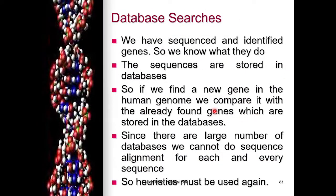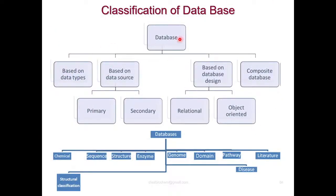If we find a new gene in the human genome, we can compare it with already-found genes stored in the database. Since there are a large number of databases, we cannot do sequence alignment for each and every sequence. This leads to the classification of databases — classified on the basis of what we work on, primary uses, data types, and data sources.